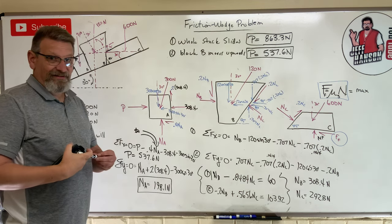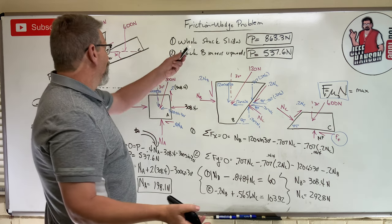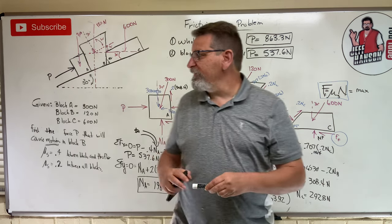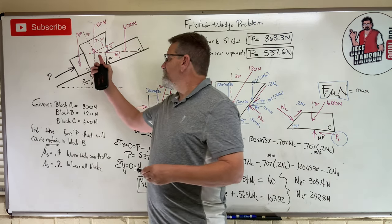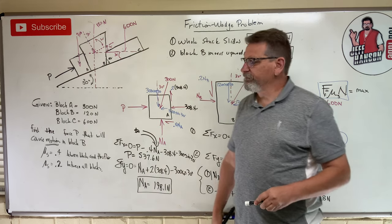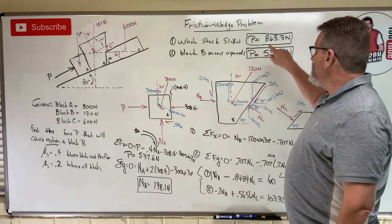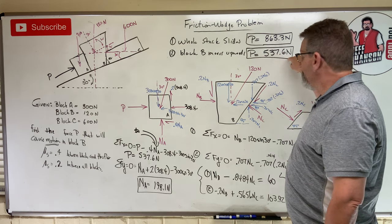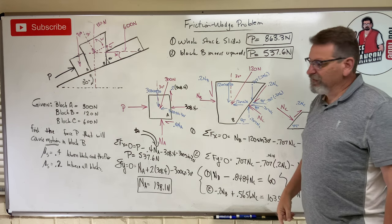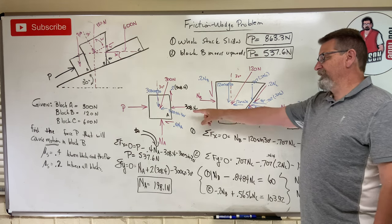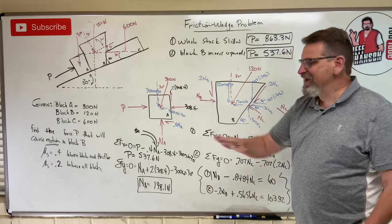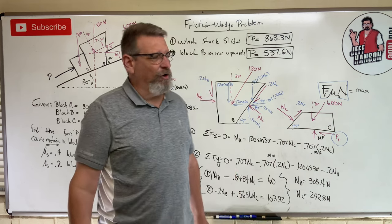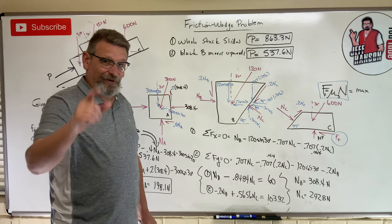So block B moves when P = 537.6 N — block B squirts uphill and block C never moves. Scenario one gave 863.3 N, scenario two gave 537.6 N. The smaller value, 537.6 N, is the one that happens first — that's the answer. You must solve both scenarios. The key is drawing beautiful, perfect free body diagrams every time.